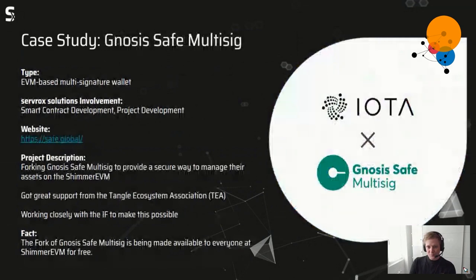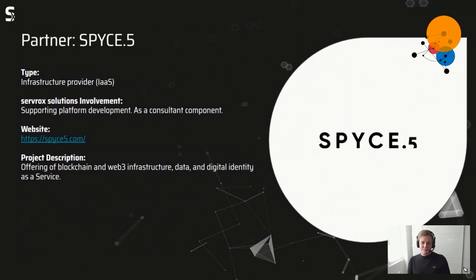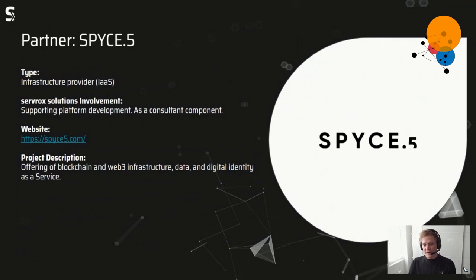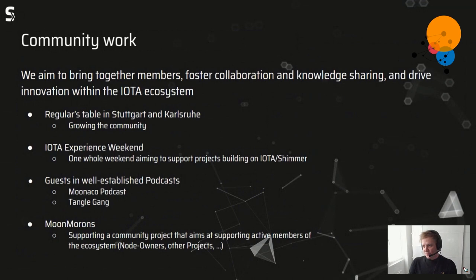That's the topic I want to talk about — how we, together with the IOTA Foundation, enabled Gnosis multi-signature wallets for IOTA and Shimmer. Our recently announced partner is Spice5, which I'm really happy about because I truly believe in their product and service. I'm looking forward to building the platform with them and acting as a consulting partner for projects that want to use Spice5 in the future.